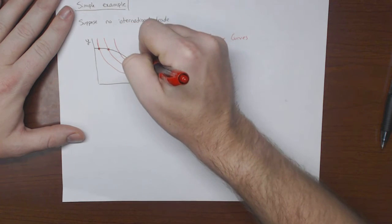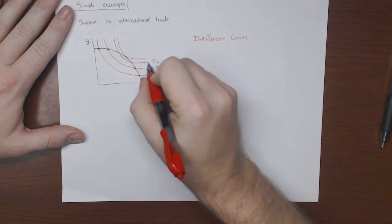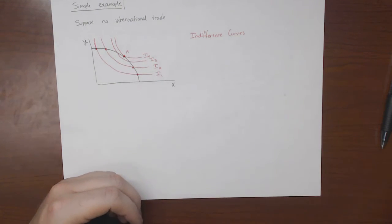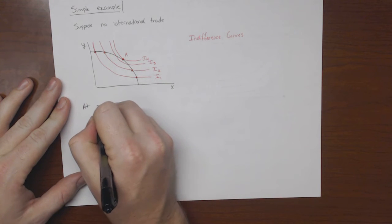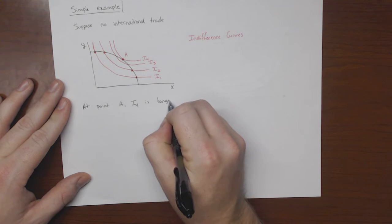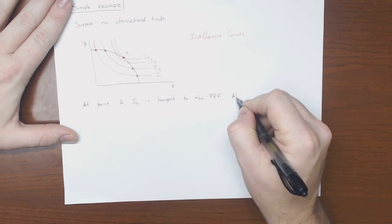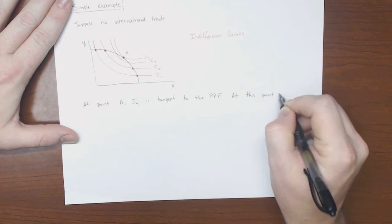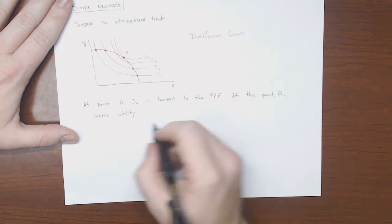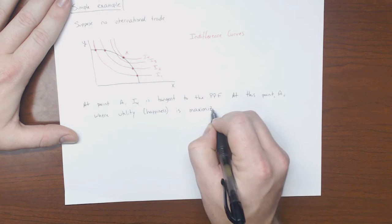And we can do this again, all right, and get on a third and even higher indifference curve. And if we continued this, we would find at some point there's going to be a tangency. So point A. At point A, I4 is tangent to the PPF. And it's at this point where utility, which is economist language for happiness, is maximized.